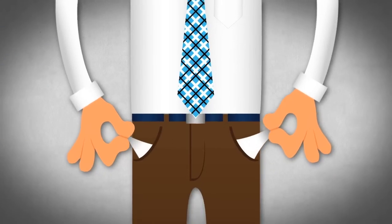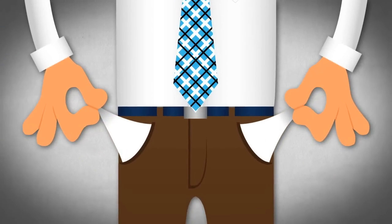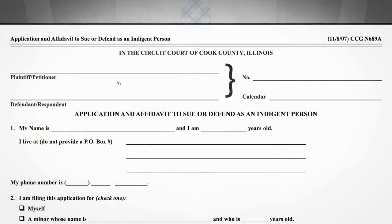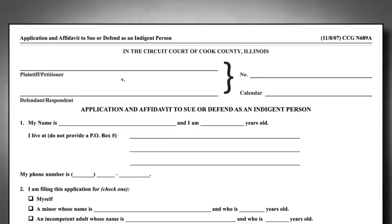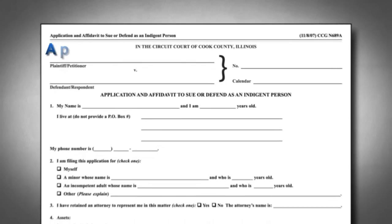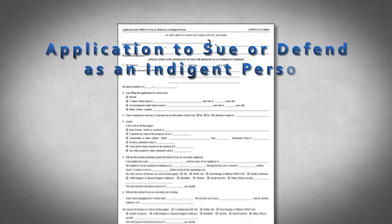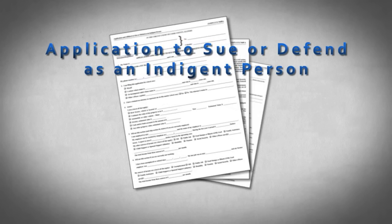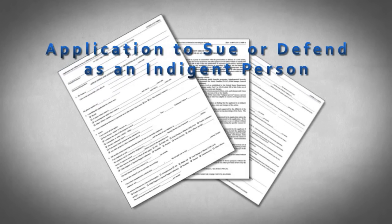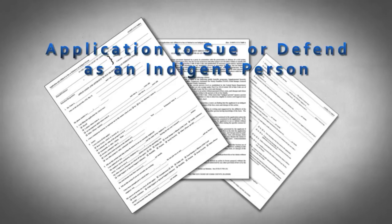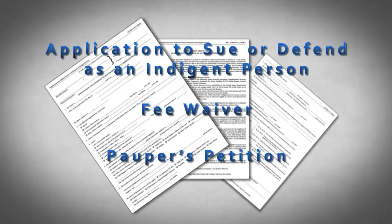If you don't have money to pay filing fees, you may ask the court to let you file for free. You do this by filling out a form called an application to sue or defend as an indigent person and giving it to the court. This form is also known as a fee waiver or a pauper's petition.